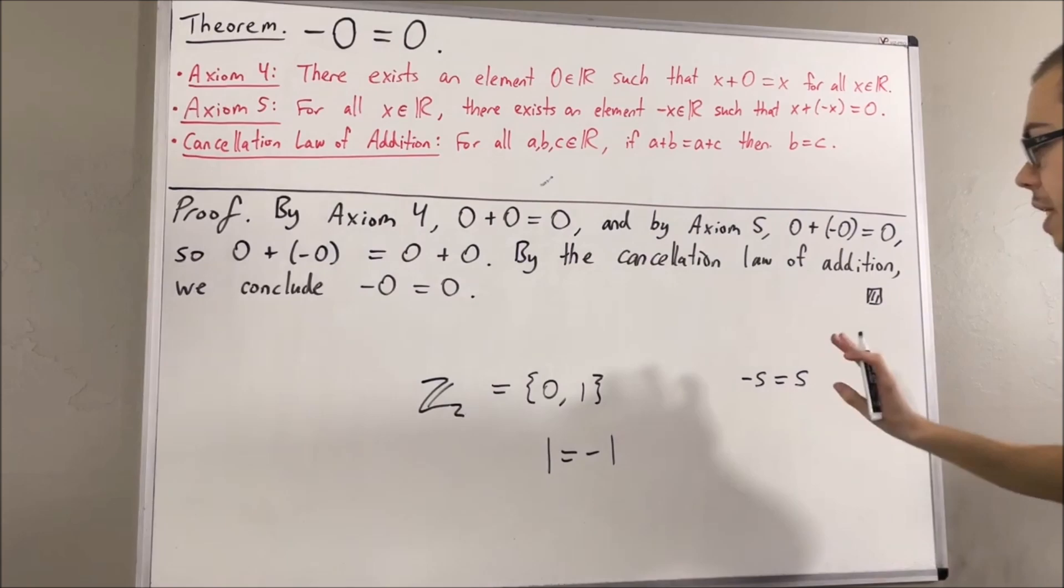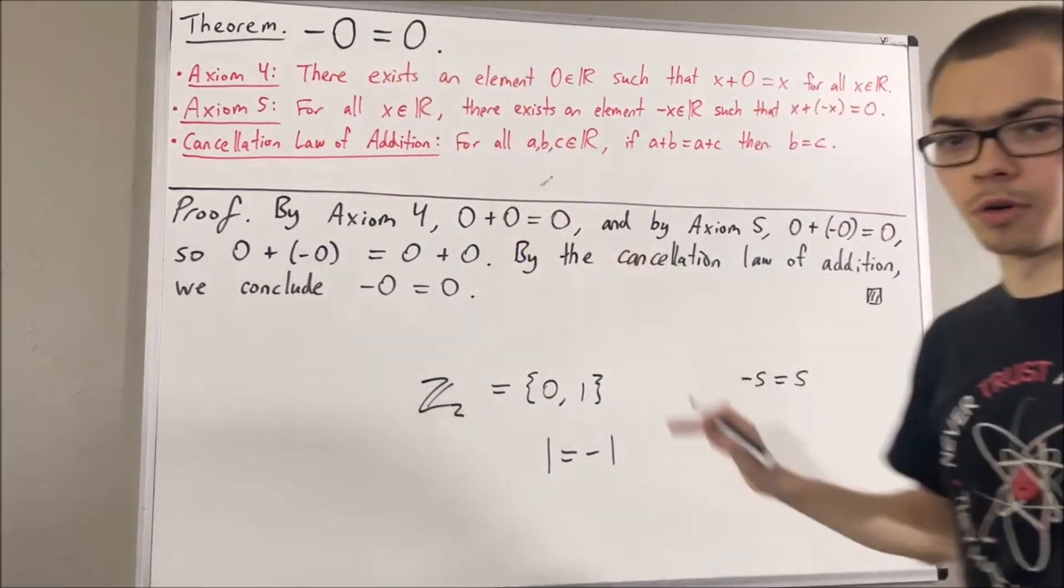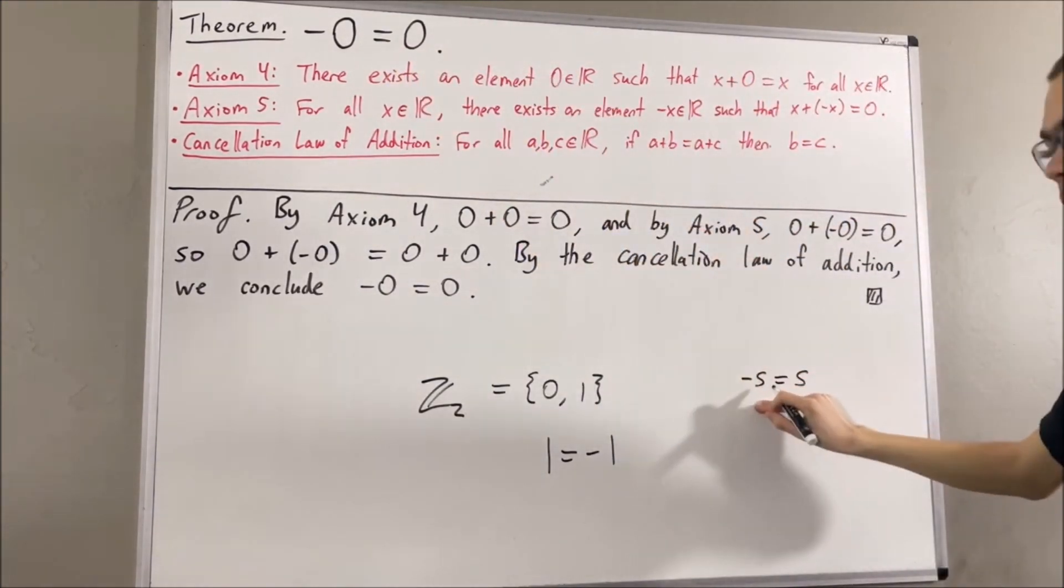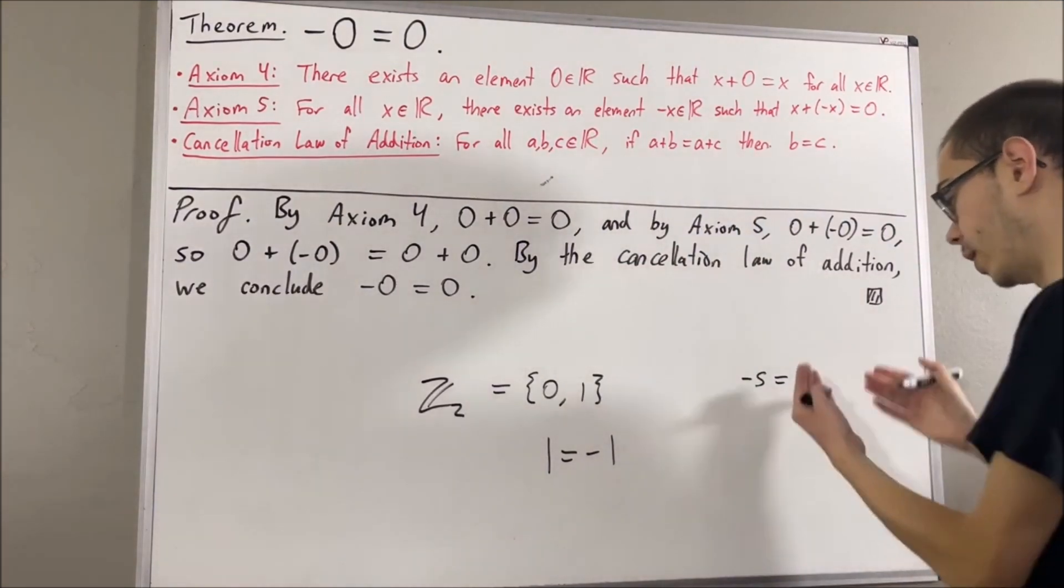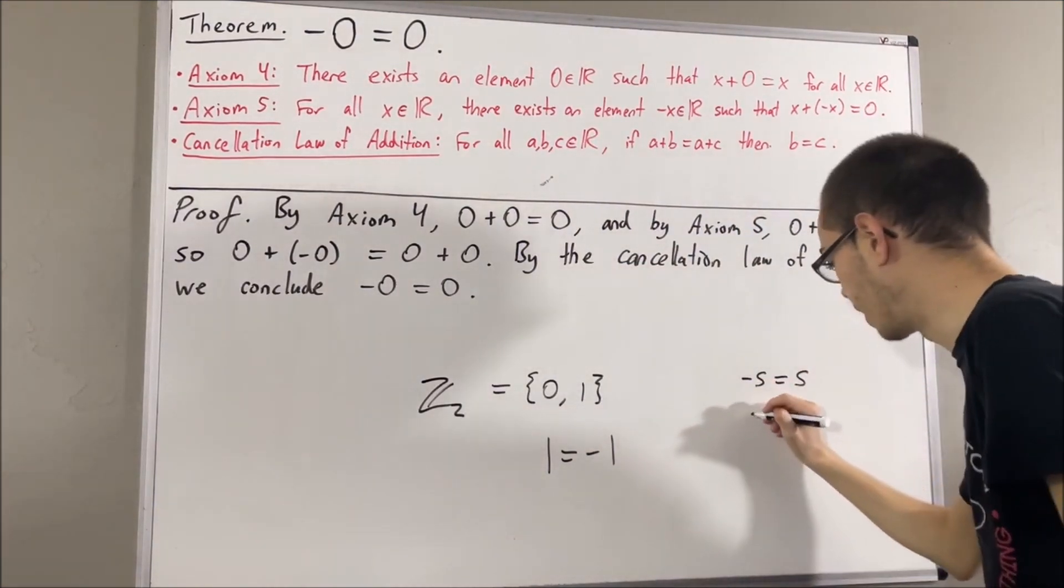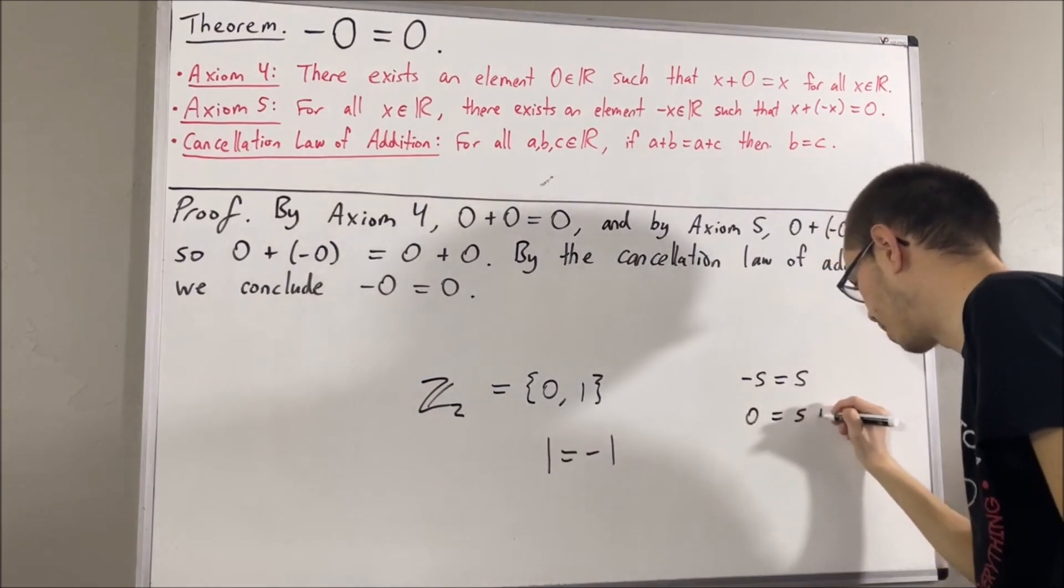From here, we want to show that S is equal to zero. So, that will show zero uniquely satisfies this property. Well, from here, we can add S on both sides to obtain zero equals S plus S.